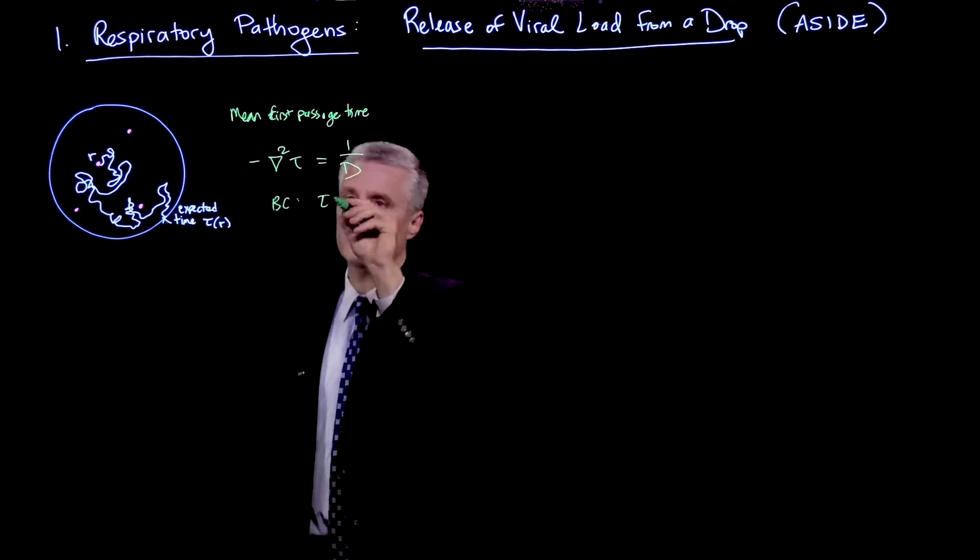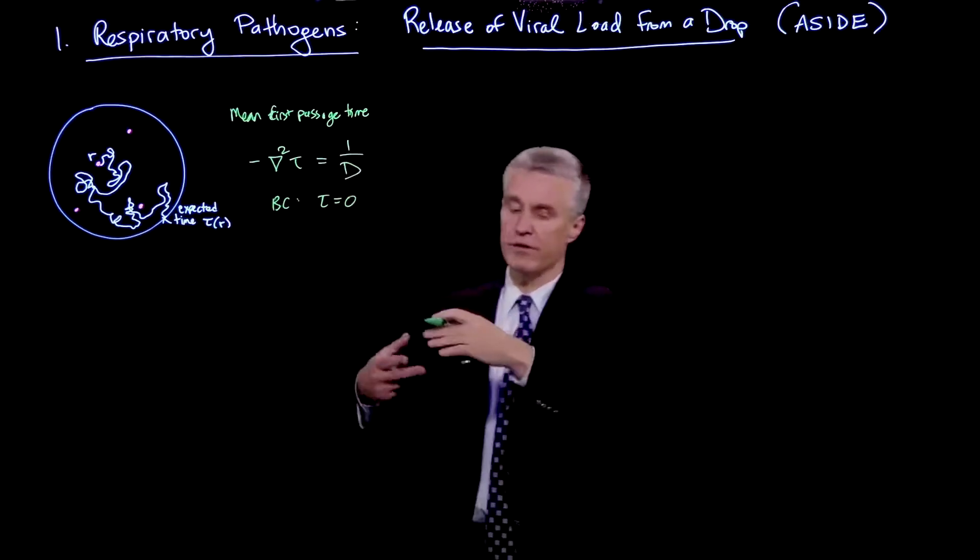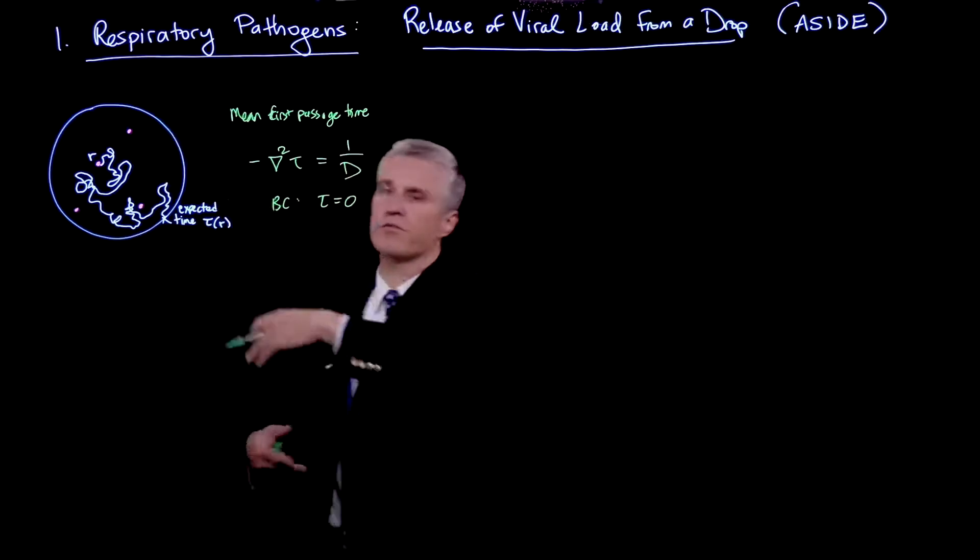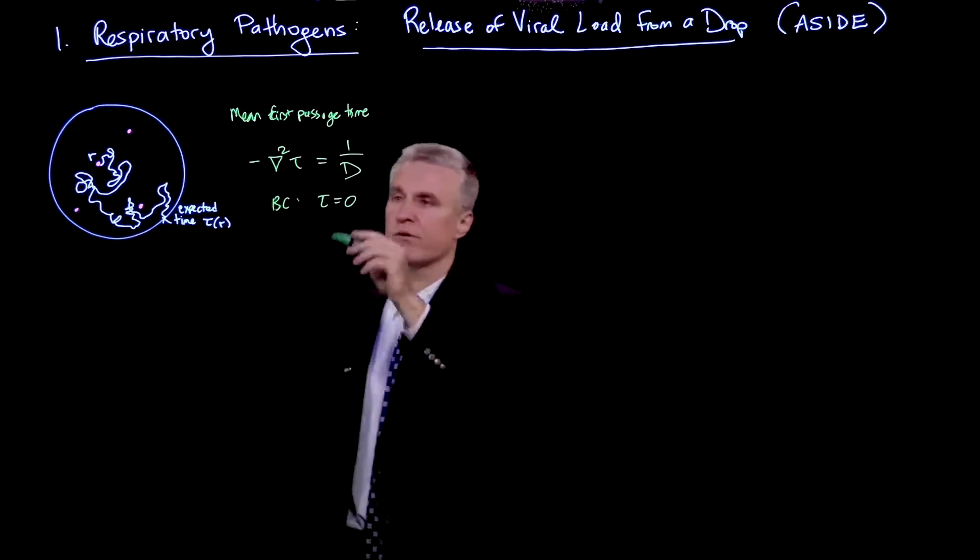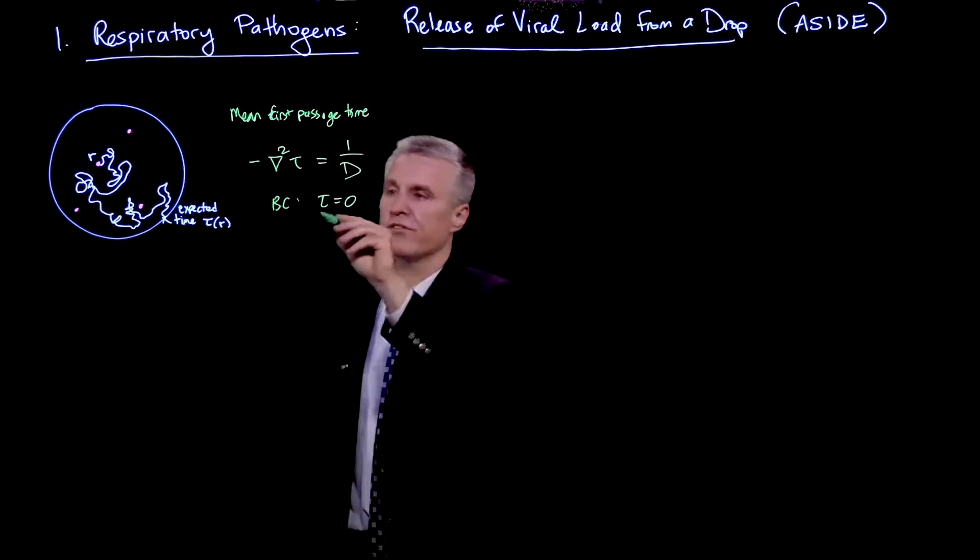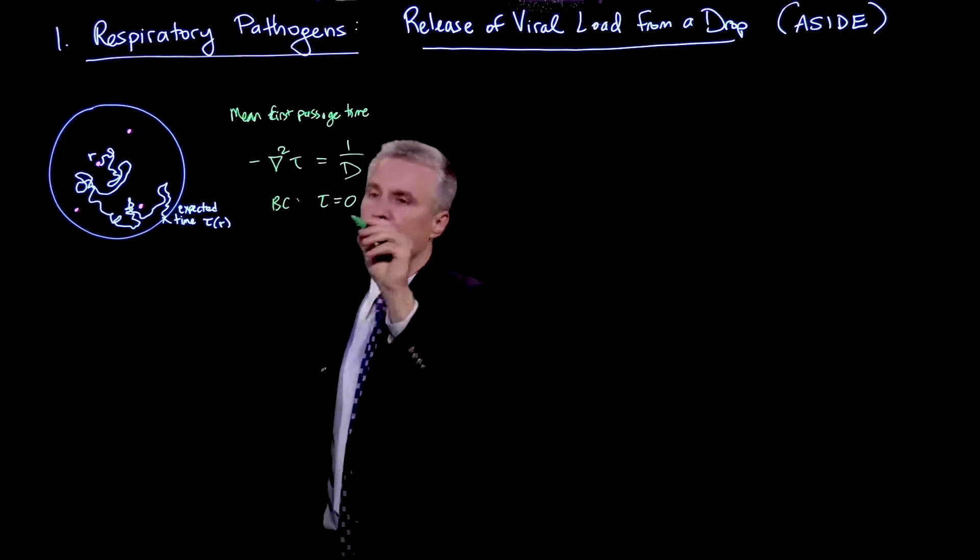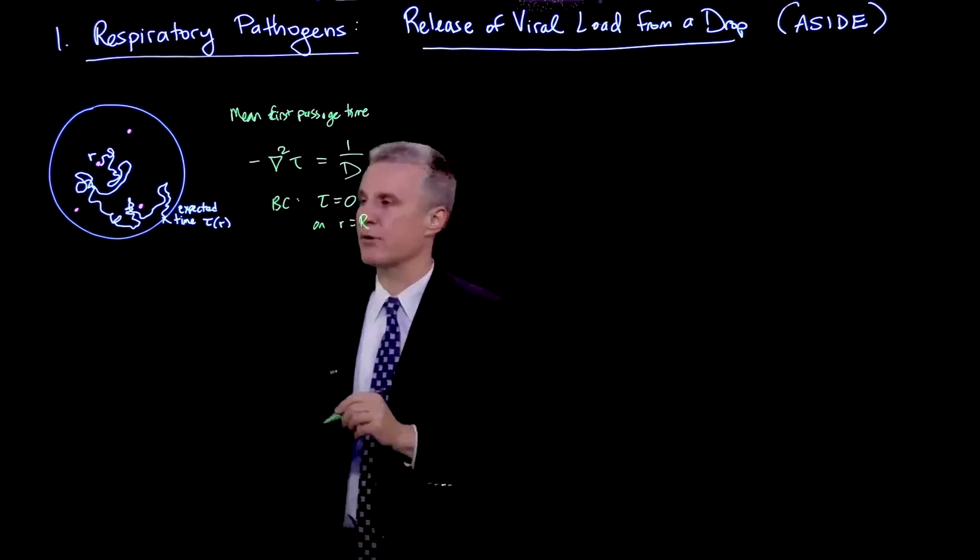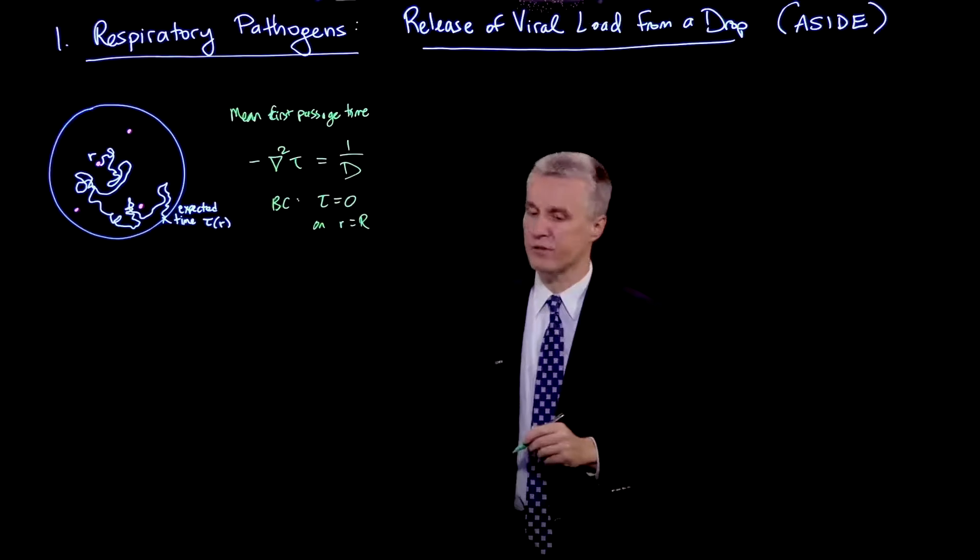And the boundary condition for this equation is that it's an absorbing boundary. So when the virion gets to the surface, it's gone. And that's when the stochastic process finishes. So it's tau equals 0 on radius capital R, which is the radius of the droplet. So that's on the boundary.